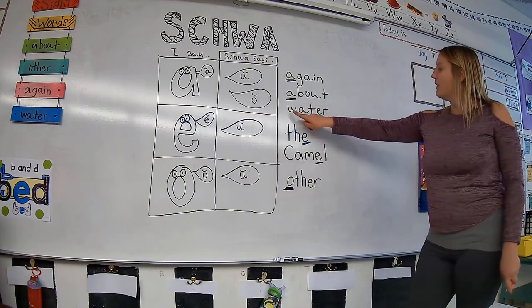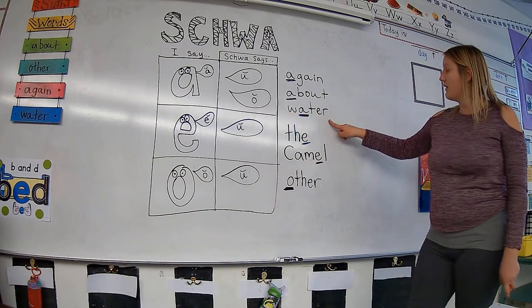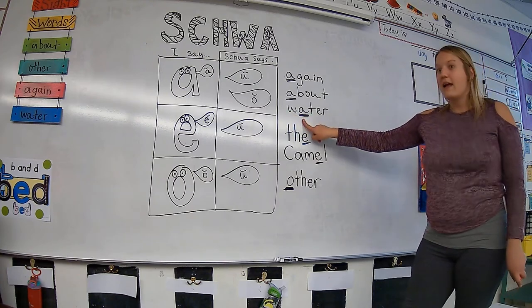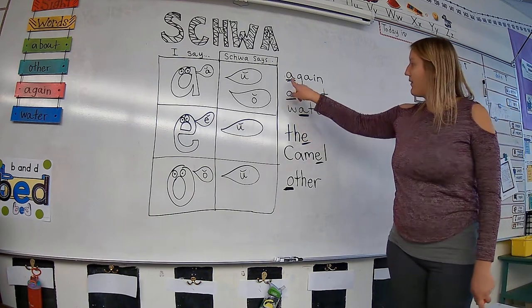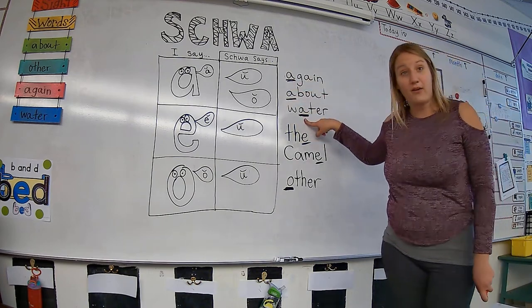Another word, water, has the A in the middle of it and it can also be a schwa. So a schwa can be at the beginning, the middle, and it can also come at the end.